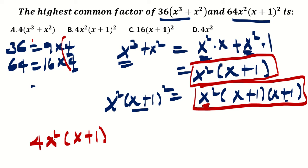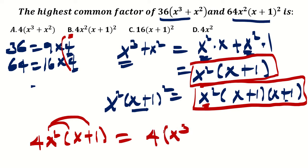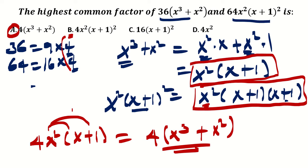But when you look at the choices, there is no such expression directly. Choice B looks close, but it has (x+1)², and our HCF doesn't contain that. So the variable should be distributed. When you do that — keep 4 outside, and x² times x gives x³, and x² times 1 gives plus x². This expression is found in A, so the answer is A. This one is somehow challenging because after extracting, after the long process, you will not immediately get the answer — you need to rearrange again.